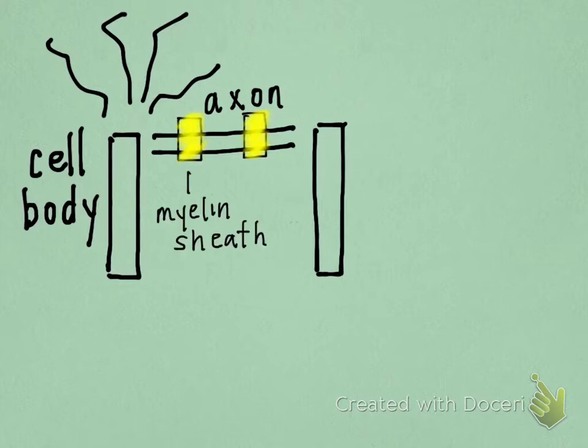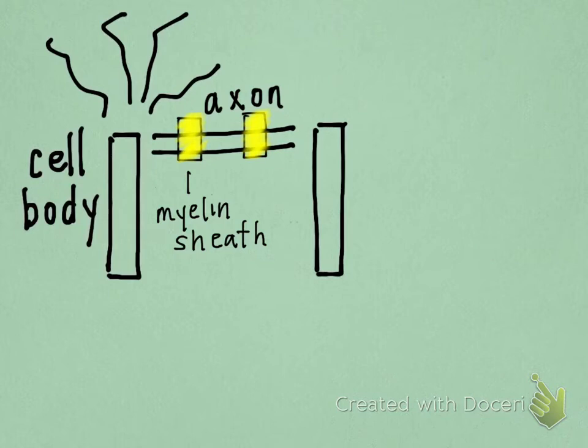To speed up communication along the axon, it is covered by myelin sheaths — a white fatty coating that acts as insulation. In other words, imagine a white fluffy marshmallow covering the axon. In this drawing, the myelin sheath is colored yellow. The signal travels faster along the myelin sheath because it hops from one myelin sheath to another rather than going slowly along the regular axon.